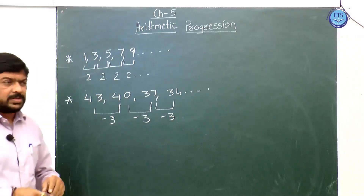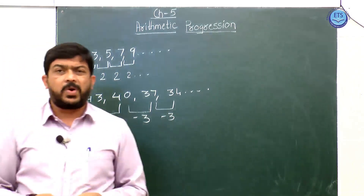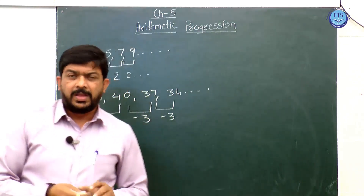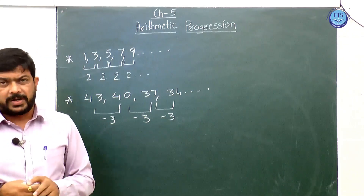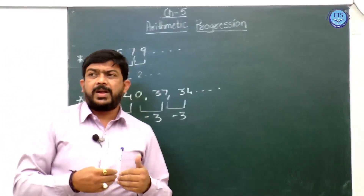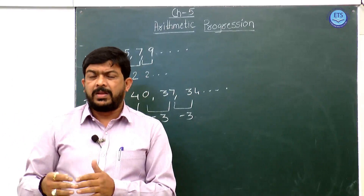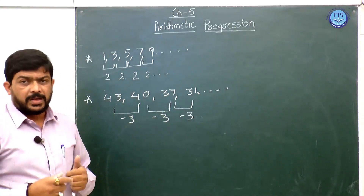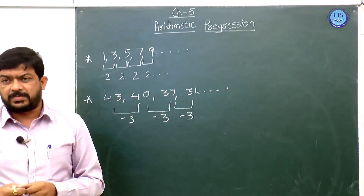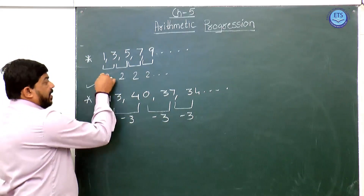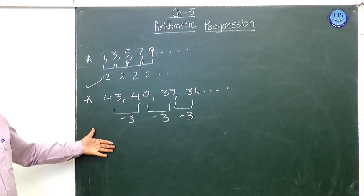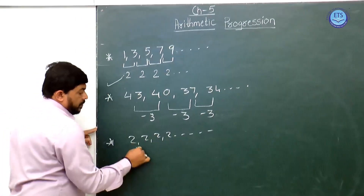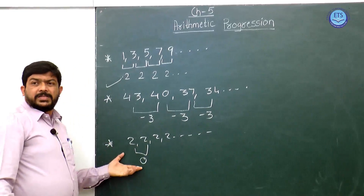Such terms are said to be in Arithmetic Progression, which we call an AP. An Arithmetic Progression is a list of numbers in which each number increases by a fixed number. That fixed number is called the common difference. This common difference can be positive, it can be negative, or it can also be 0.